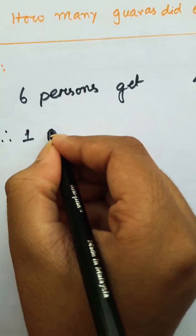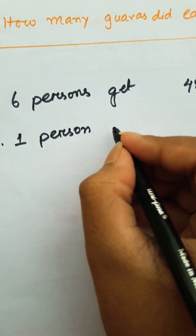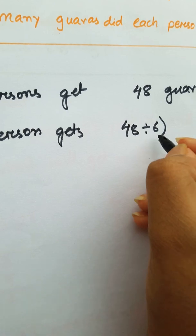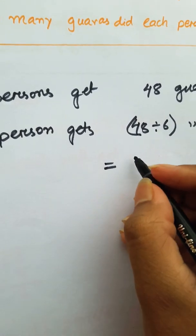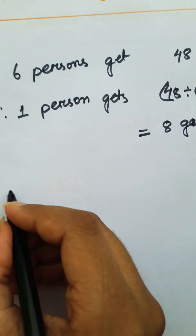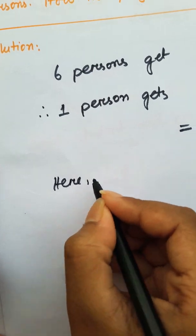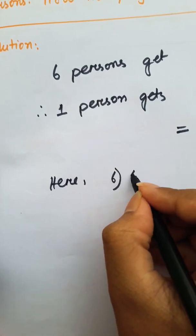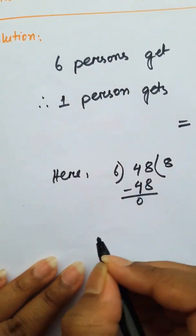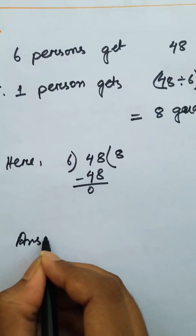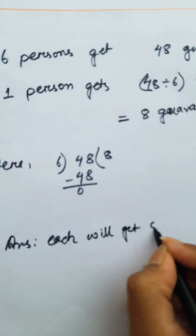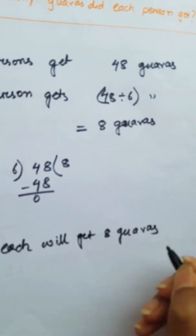We need to know that 6 persons get 48 guavas — 8 guavas each. Because we know 8 times 6 are 48. Therefore, answer: each will get 8 guavas.